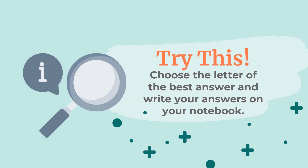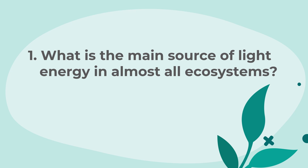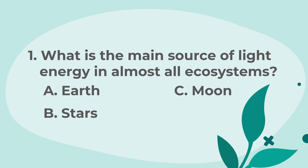Try this! Let us start by answering this 5-item quiz. Choose the letter of the best answer and write your answers on your notebook. Number 1: What is the main source of light energy in almost all ecosystems? A. Earth. B. Stars. C. Moon. D. Sun.